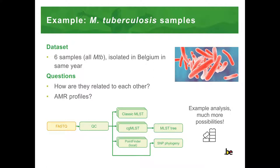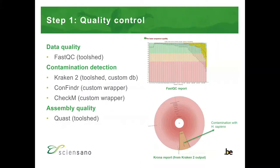Evidently, this is just an example and there are many more possibilities, as each of these tools functions as a building block. The first step in the workflow is Quality Control, for which we offer several tools, including frequently used ones from the toolshed such as FastQC and Qost, but we also offer a set of custom wrappers around tools such as ComFinder and CheckM, offering a complete QC toolbox.